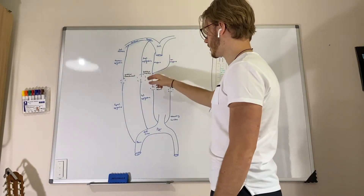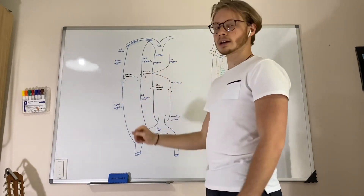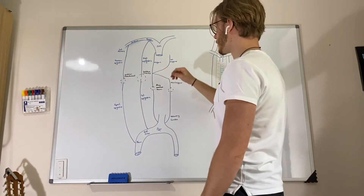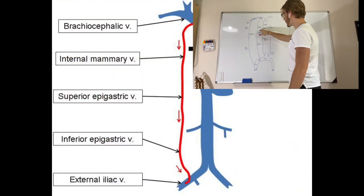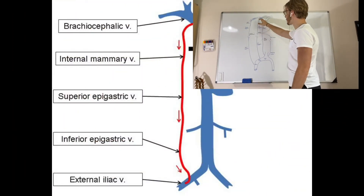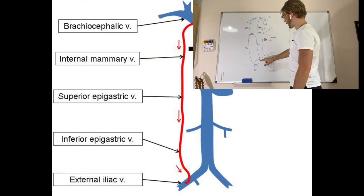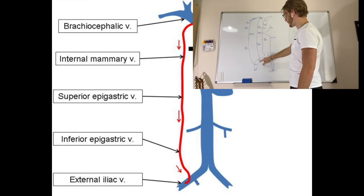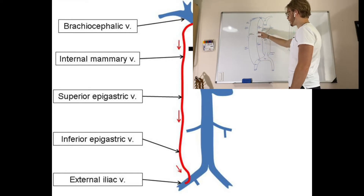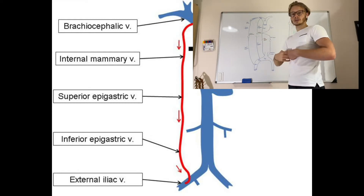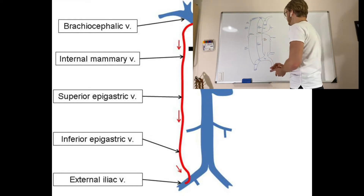The muscular umbilical caval-caval anastomosis is formed by the superior epigastric coming from the internal thoracic vein on the SVC side. The IVC connection comes from the inferior epigastric from the external iliac vein. They form their anastomosis around the umbilical area.